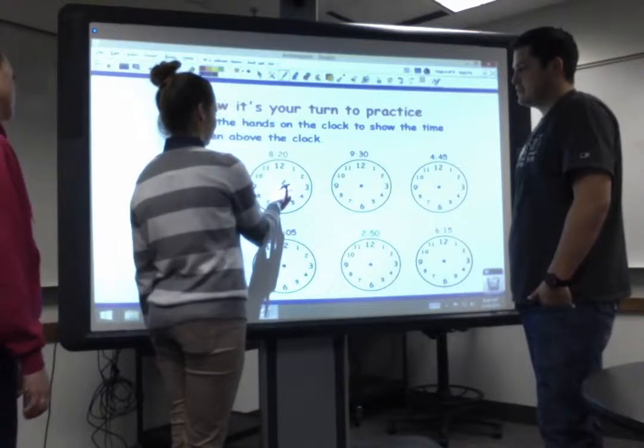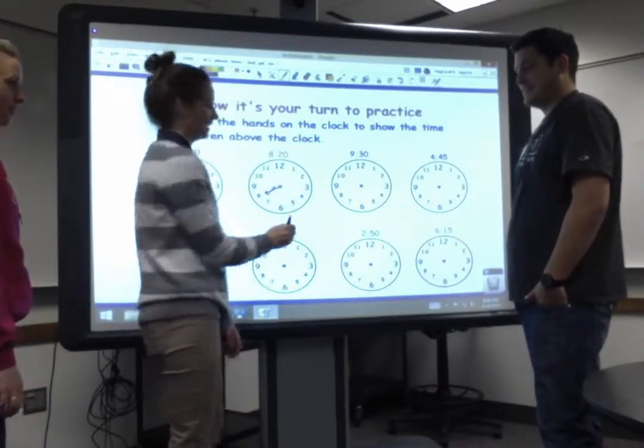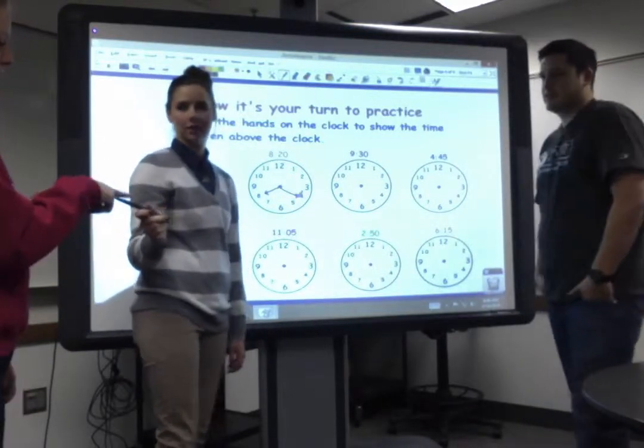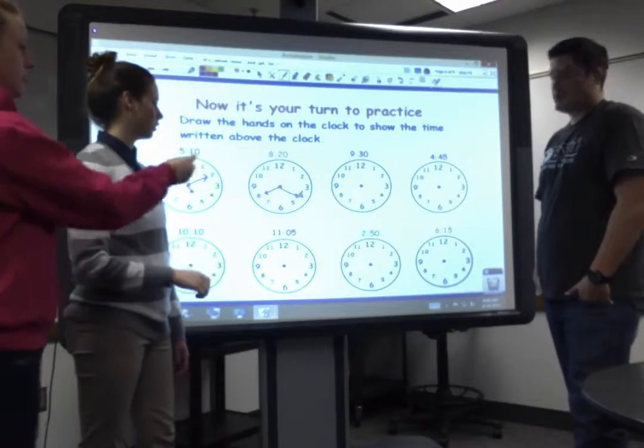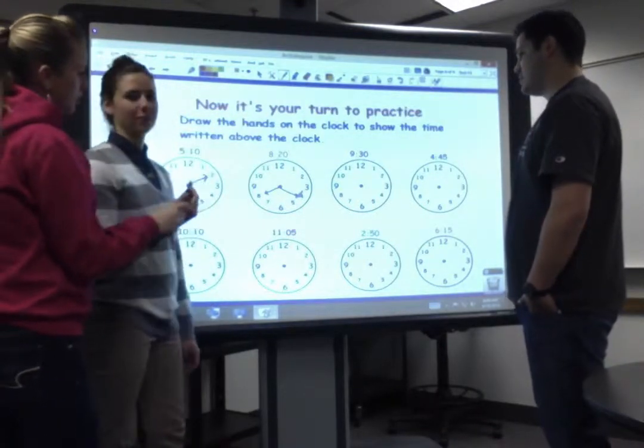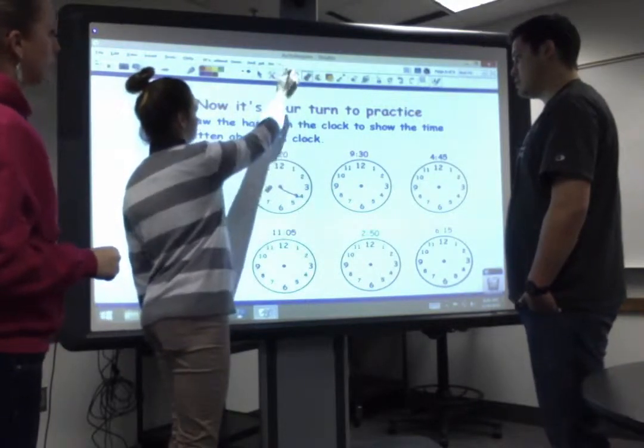8:10. You have the short hand go to 8. 8:20. And the long hand goes to 20. It's really nice to have a pen, because then you can do it on here, and you can erase when they make mistakes. Which I kind of made a mistake, so that's too long. We'll try again. 10.